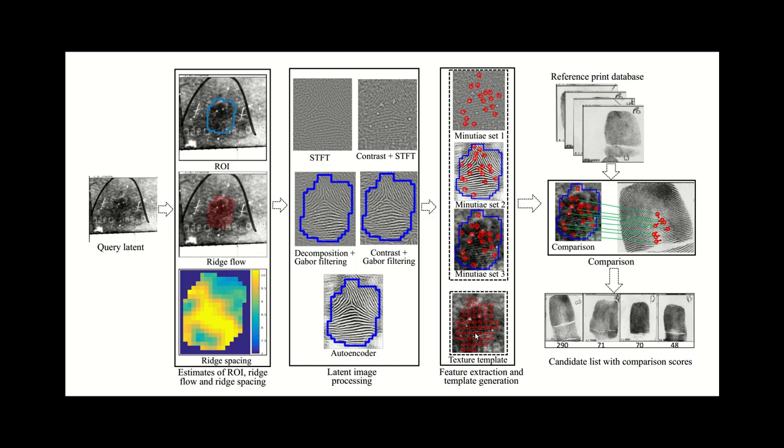This texture template is again generated based on all of this preliminary processing that we did in the first two stages. Up to this point, the system has done a lot of processing on the input image to pull different information out of it, and we have four templates as a result of that process: we have three minutiae templates here and a texture template.